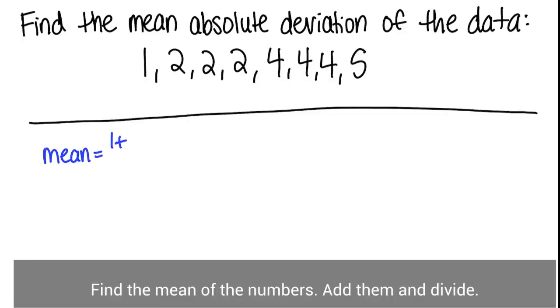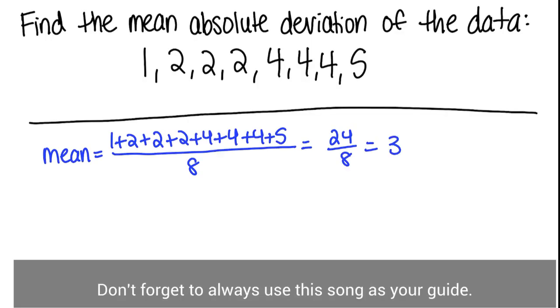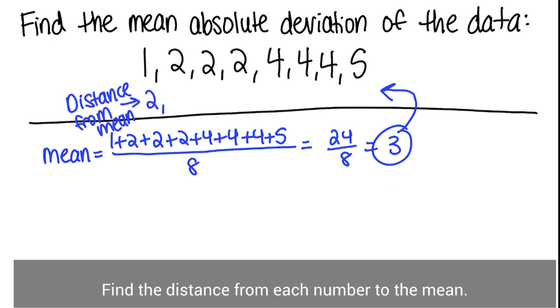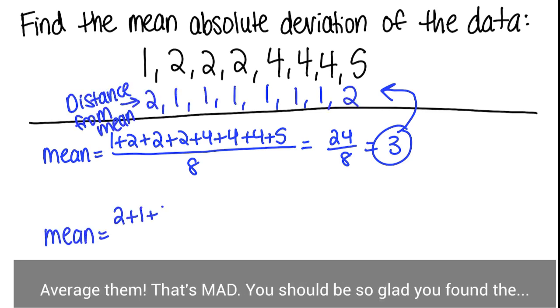Find the mean of the numbers — add them and divide. Don't forget to always use the song as your guide. Find the distance from each number to the mean, average them — that's MAD. You should be so glad you found the mean absolute deviation.